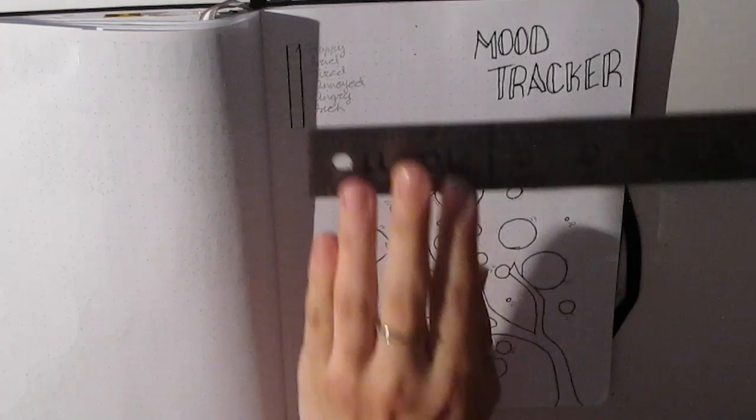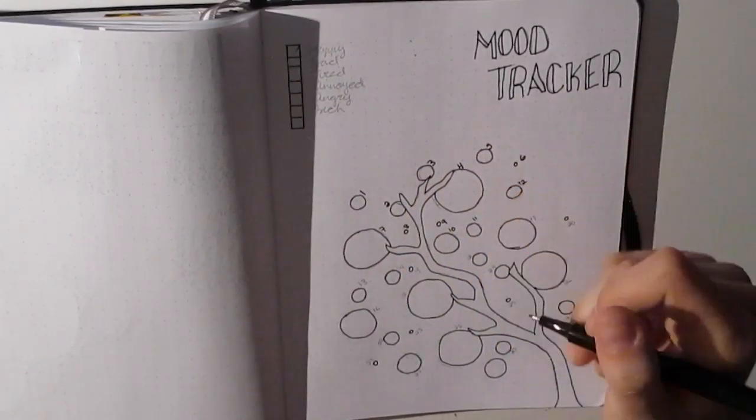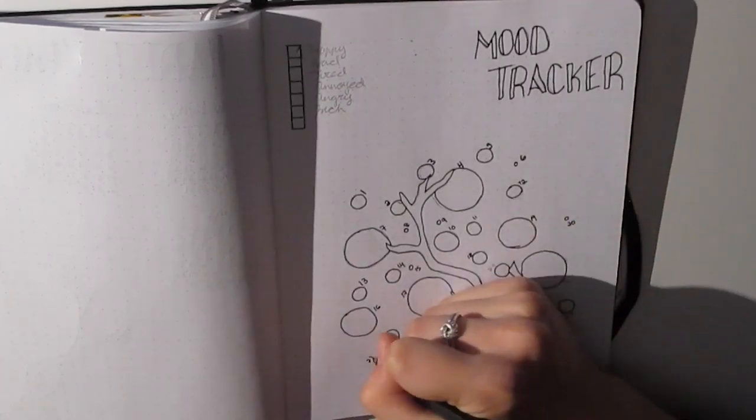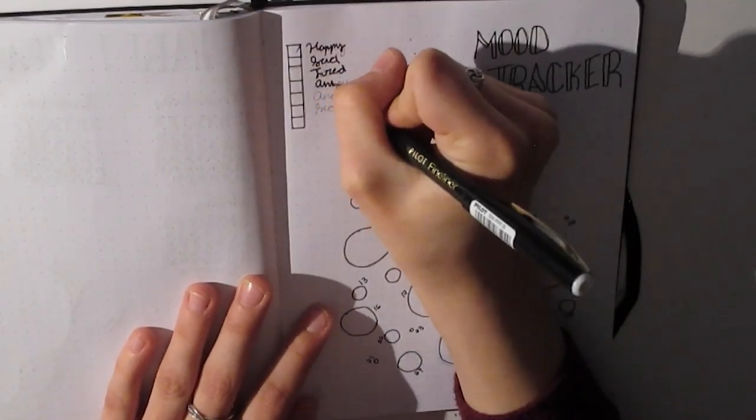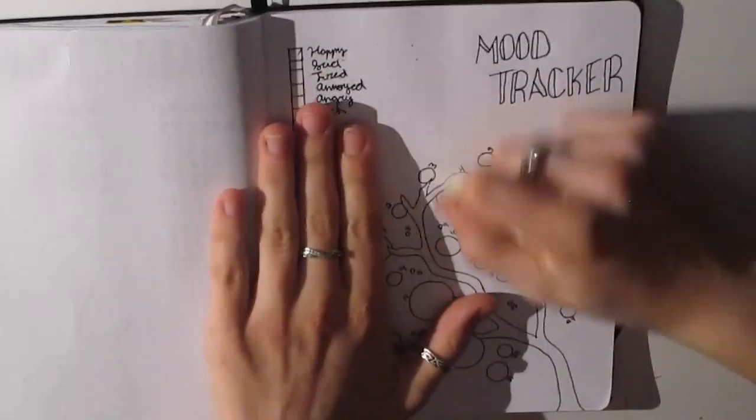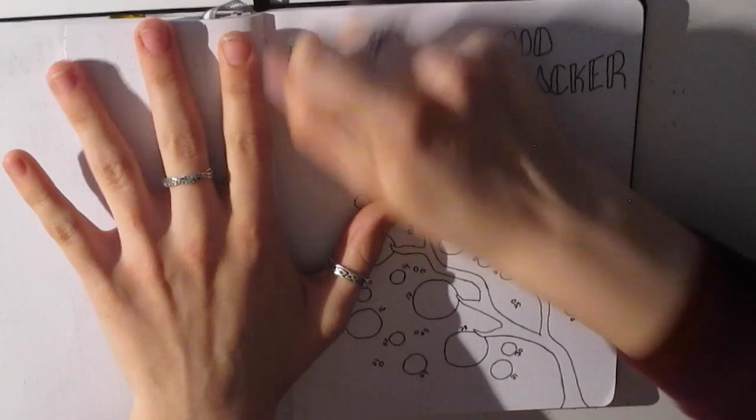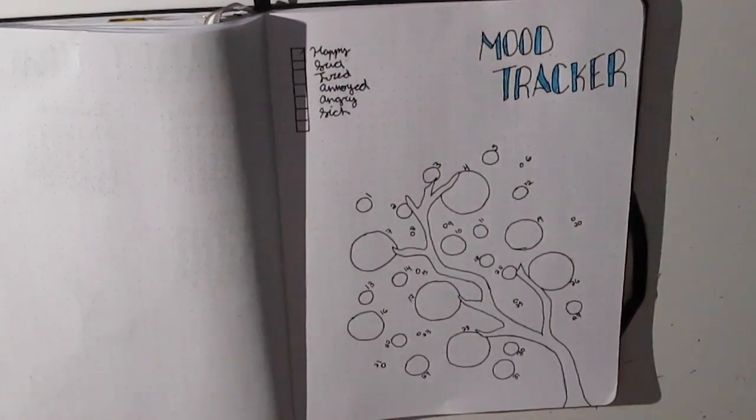At the top you can see I have created my key ranging from happy, sad, tired, annoyed, angry, and sick. I've also left a blank just in case I need another place to fill in a mood because sometimes I can't always remember what mood that I will be in or all of the ones that I might experience, so I'll leave a few blanks just in case if I need to fill in later on. And that is my mood tracker.